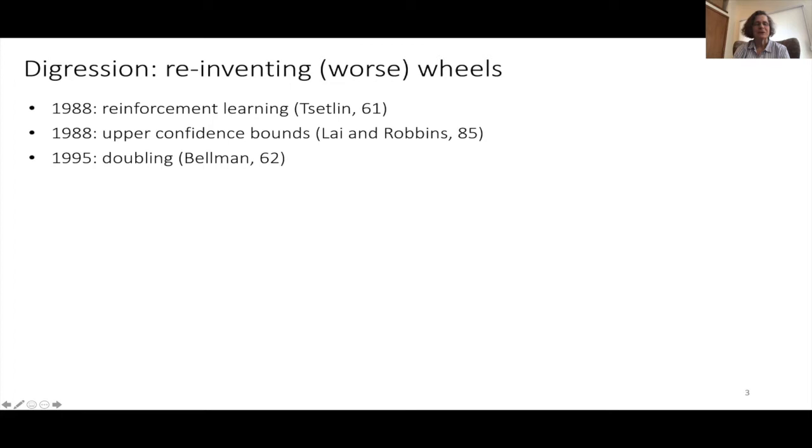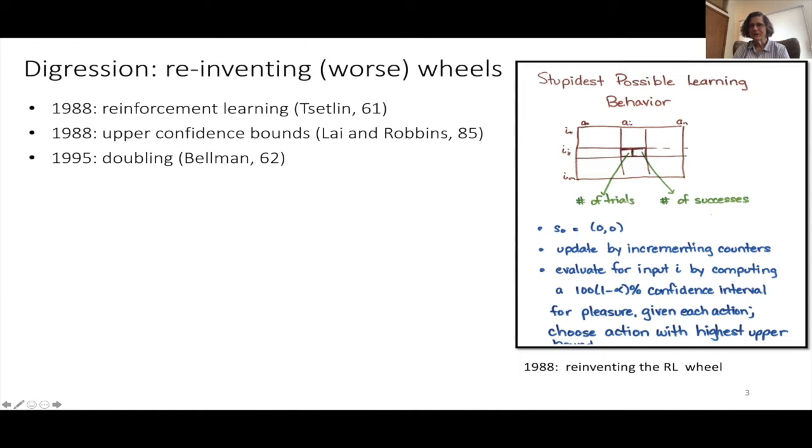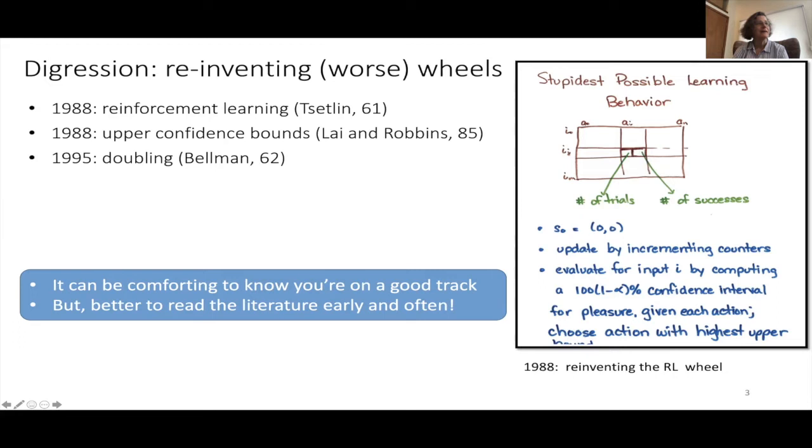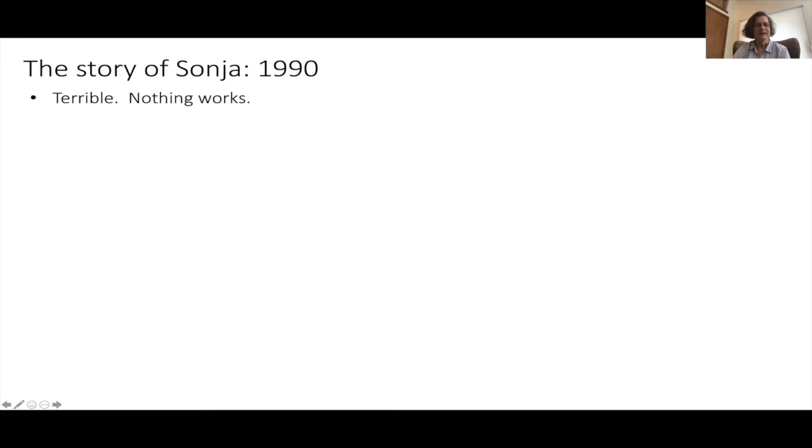One digression here, just for fun, is that I had been working on reinforcement learning, and all along, I realized I had reinvented a bunch of things. There was nice old work on reinforcement learning, on upper confidence bounds, and that work I was in complete ignorance of, so I reinvented a bunch of stuff. It can be comforting to know you're on a good track because somebody else did it, but it's better to read the literature.